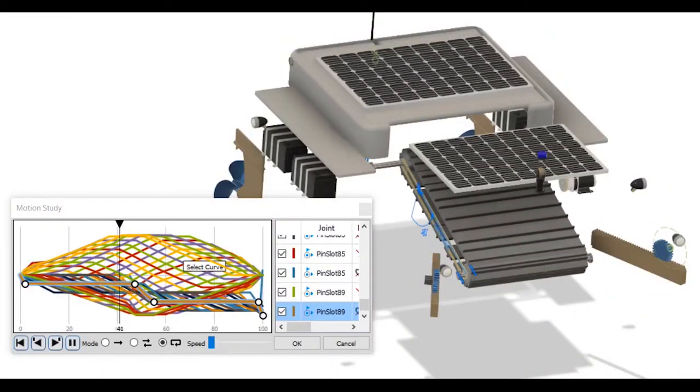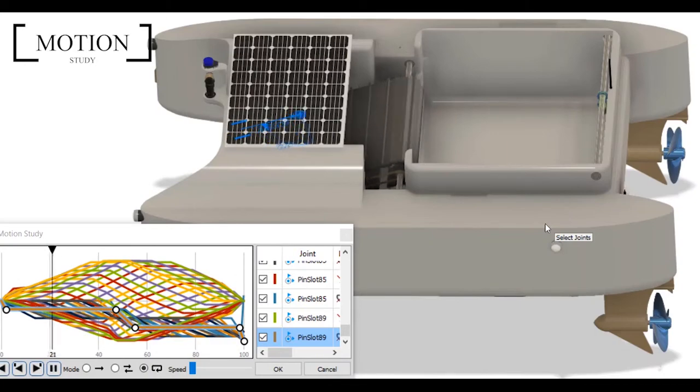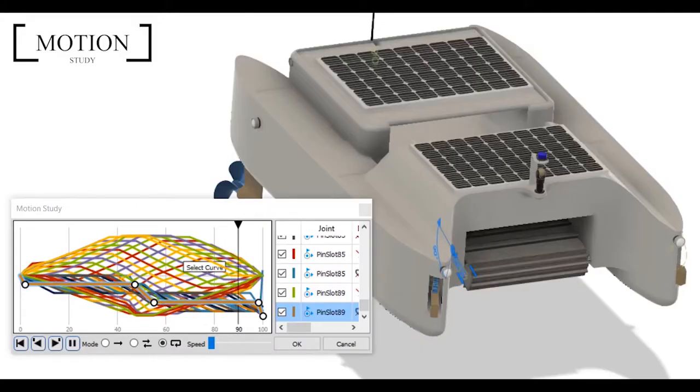The sequential motion study shows how the robot actually works. The roller conveyor belt, through constant rotational motion, draws in the polluting elements.